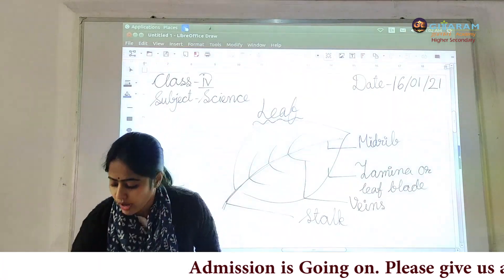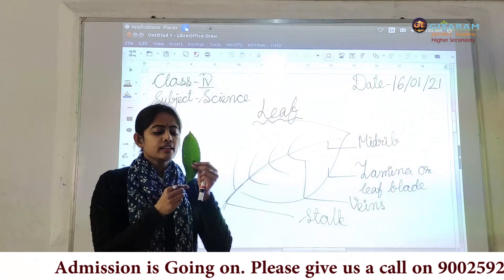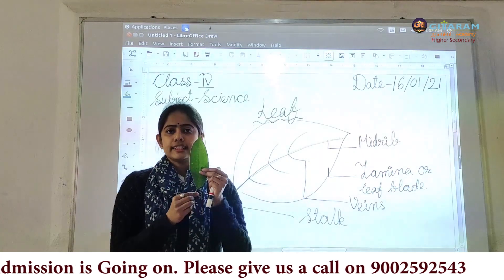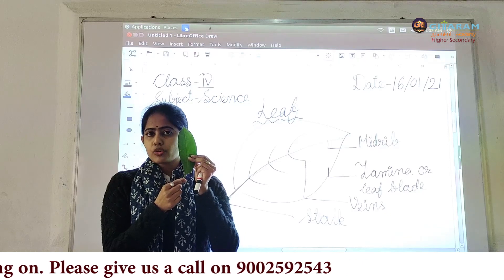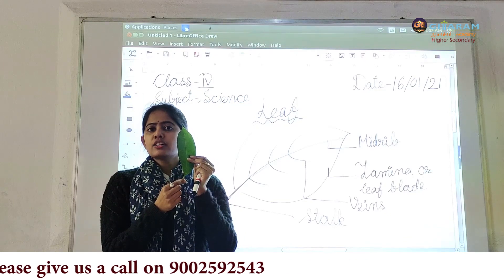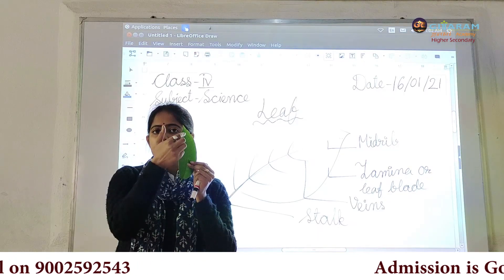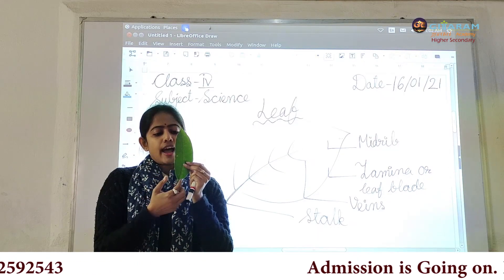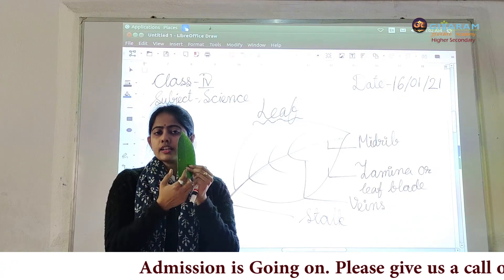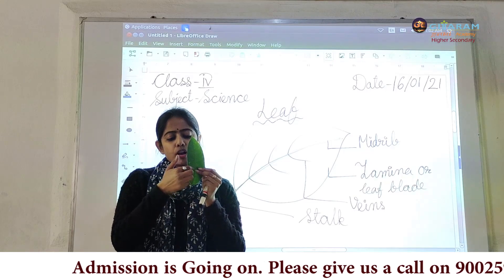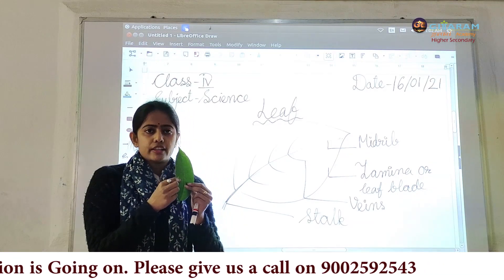Now I will show you a leaf. Here you can notice the different parts of the leaf. This portion is the stalk. And this flat broad portion is known as the lamina. This middle thick line is known as the midrib. And the small branches are known as the veins.